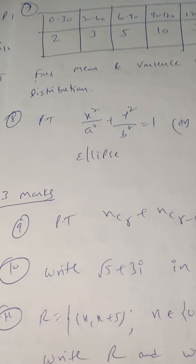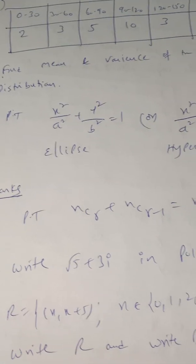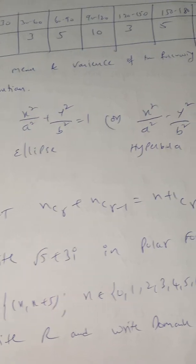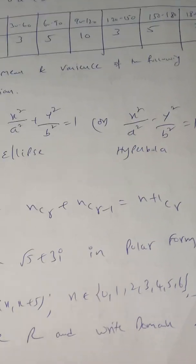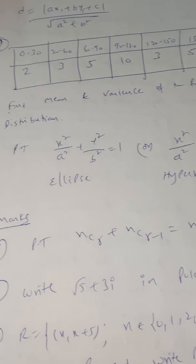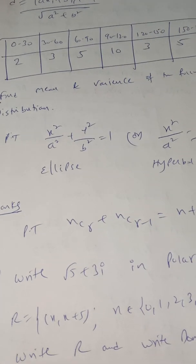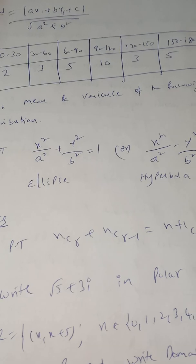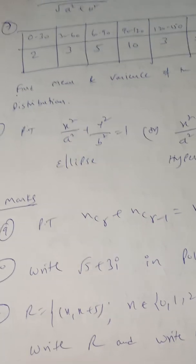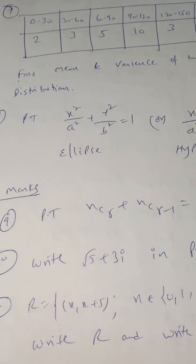Another question to go through in the last minute is: write √5 + 3i in polar form. Polar form is a very important 3-mark question in complex numbers. This question — writing √5 + 3i in polar form — is compulsorily asked and you need to focus on it in the last minute.